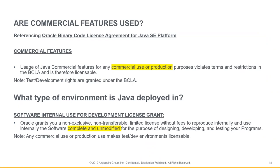If you are using commercial features within the BCLA test development rights, you're okay. That takes us to our next question — what type of environment is Java deployed in? We recommend you take a look at the BCLA, specifically Section B: Software Internal Use for Development License Grant. Oracle grants a non-exclusive, non-transferable, limited license without fees to reproduce and use internally the software, complete and unmodified, for the purpose of designing, developing, and testing your programs.